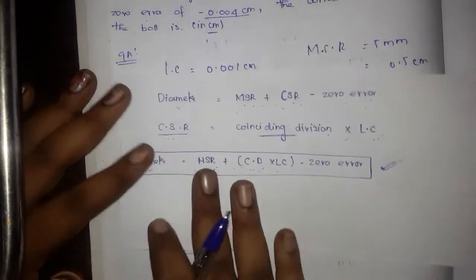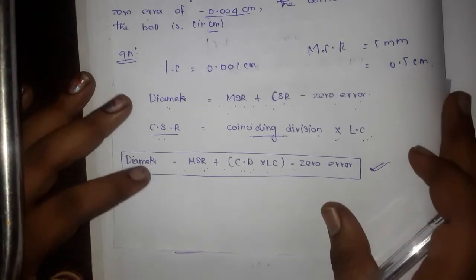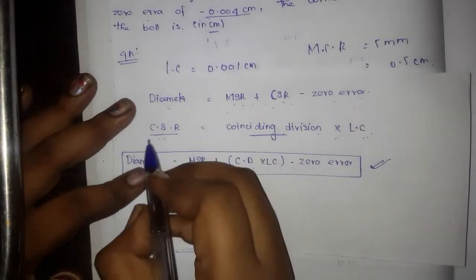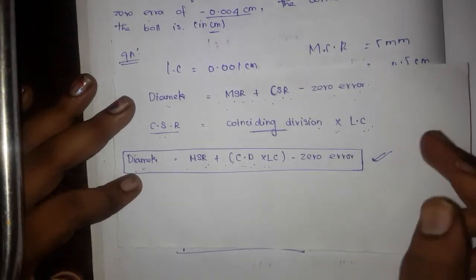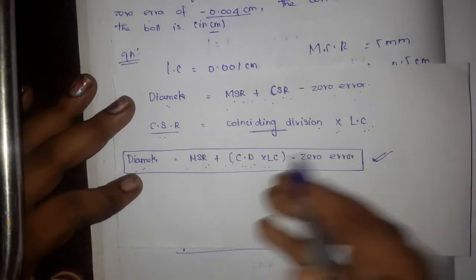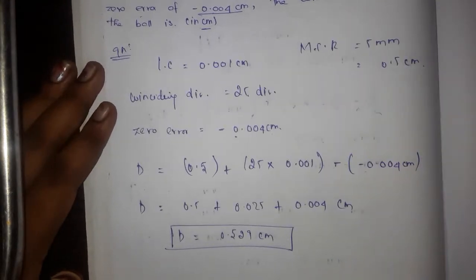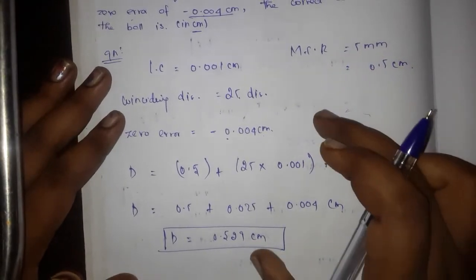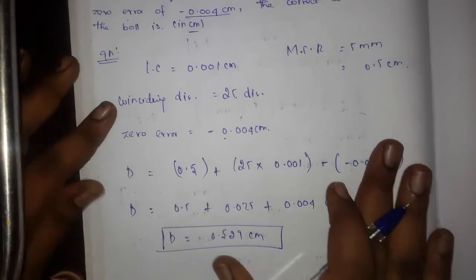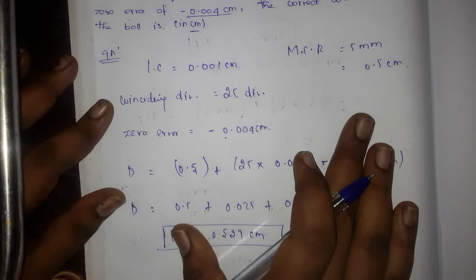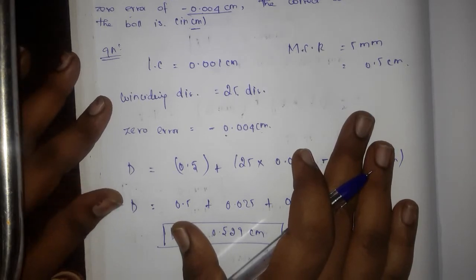If you want to find the diameter, you can use this formula. If you want to use the CSR directly, use the first formula. If you want to use the least count and coinciding division, use the third formula. If you have any doubts, leave a comment. This is our Units and Measurement topic.